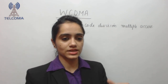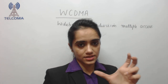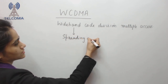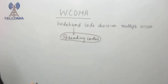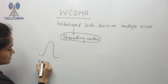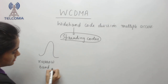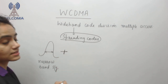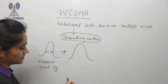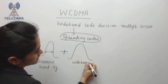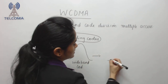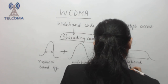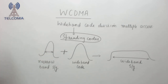To increase capacity as well as to achieve higher data rates, we have increased the bandwidth using some codes called spreading codes. We use these codes to spread the signal. For example, I have a narrow band signal, and I will map this signal to a code signal — a wideband code — and the resultant is a broadband spread signal.